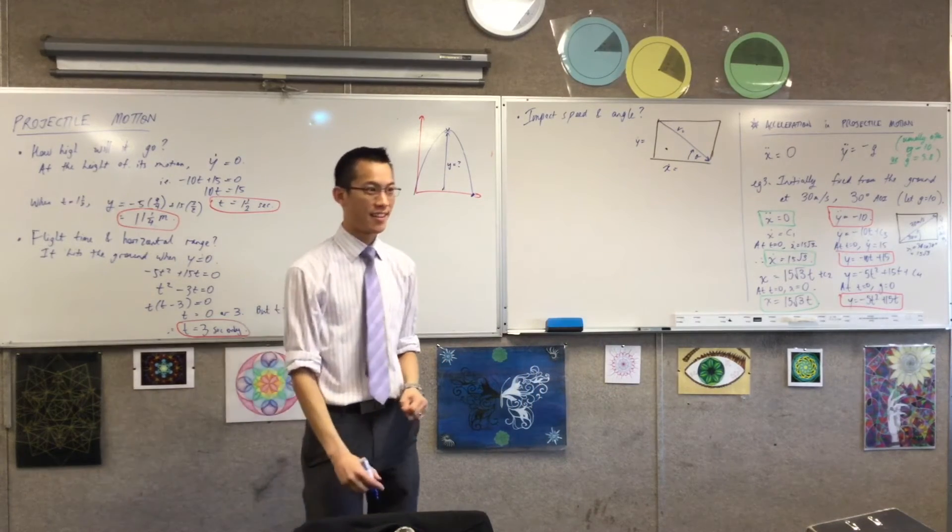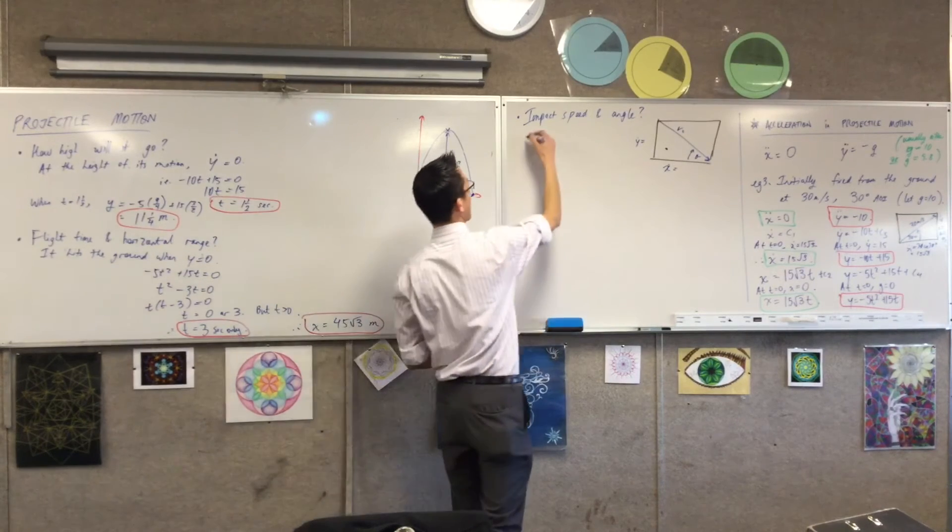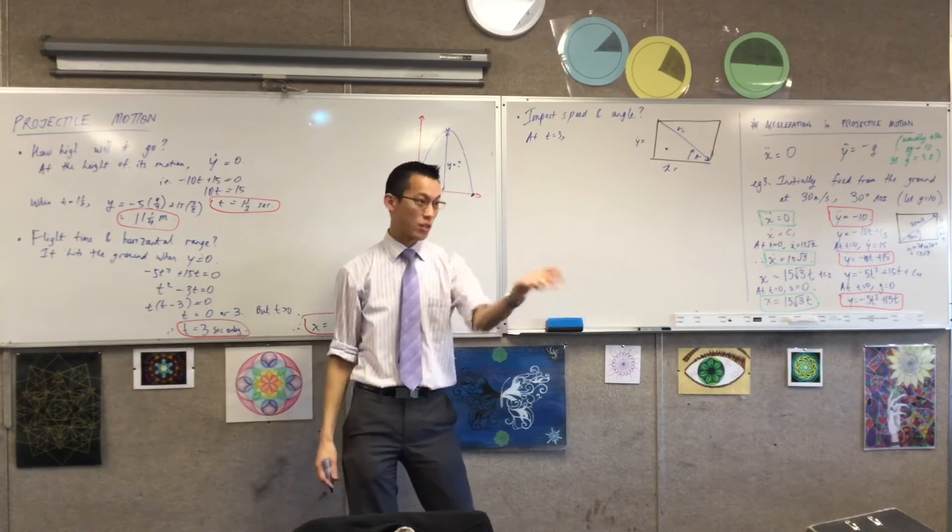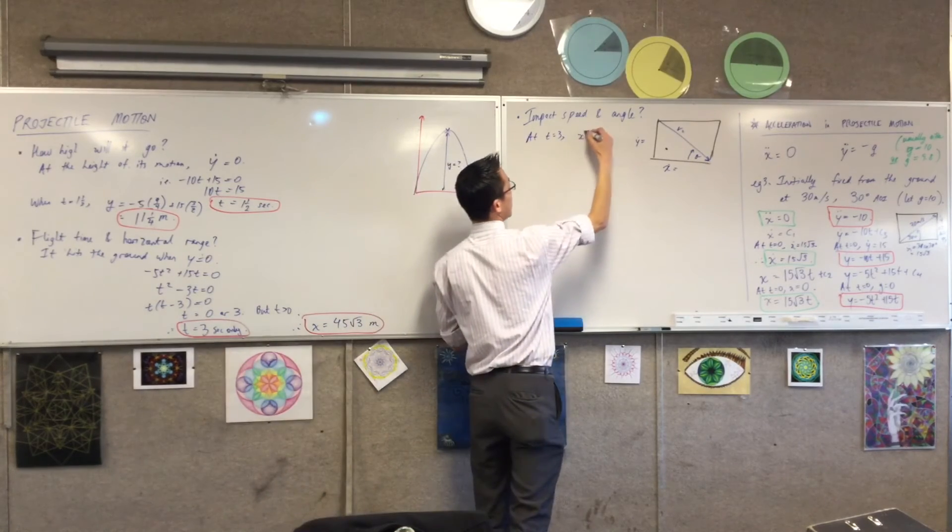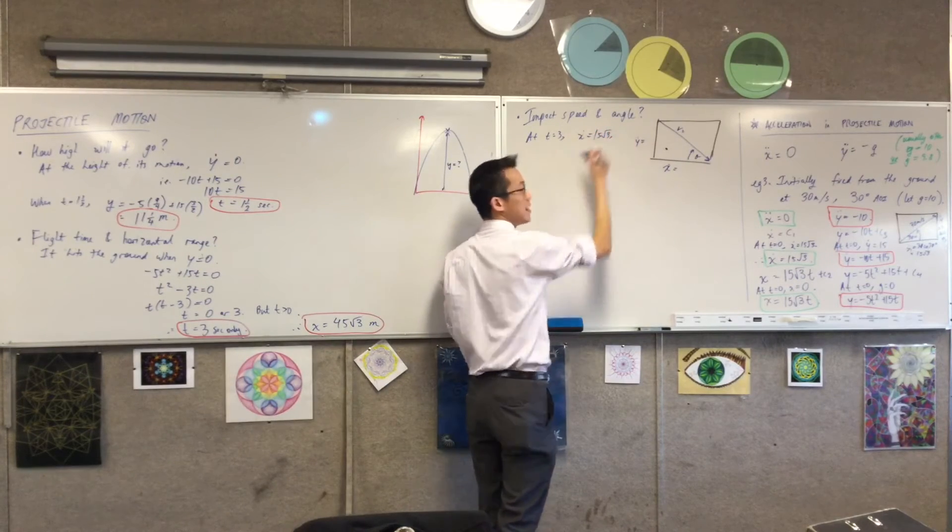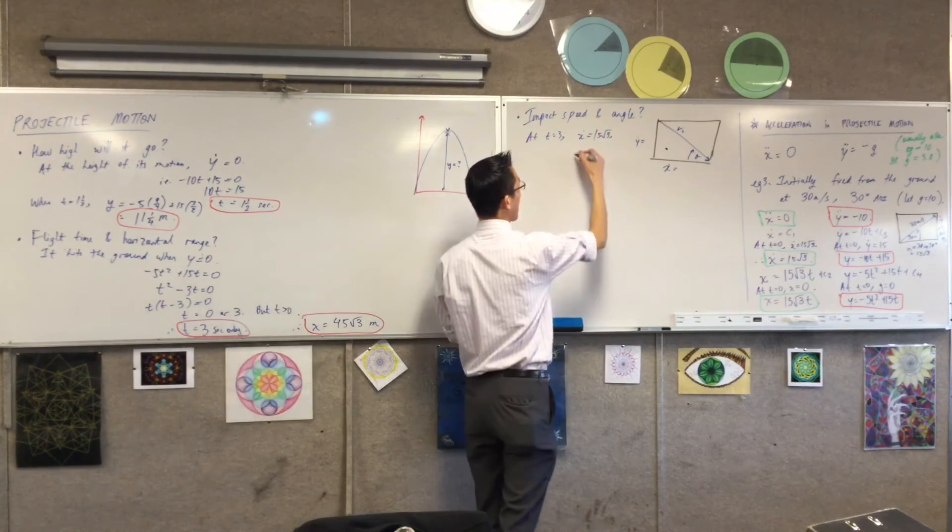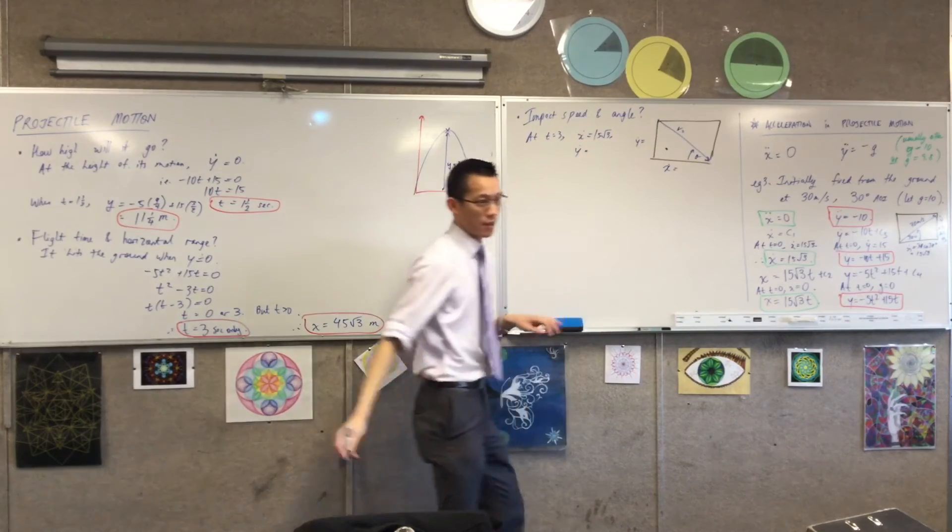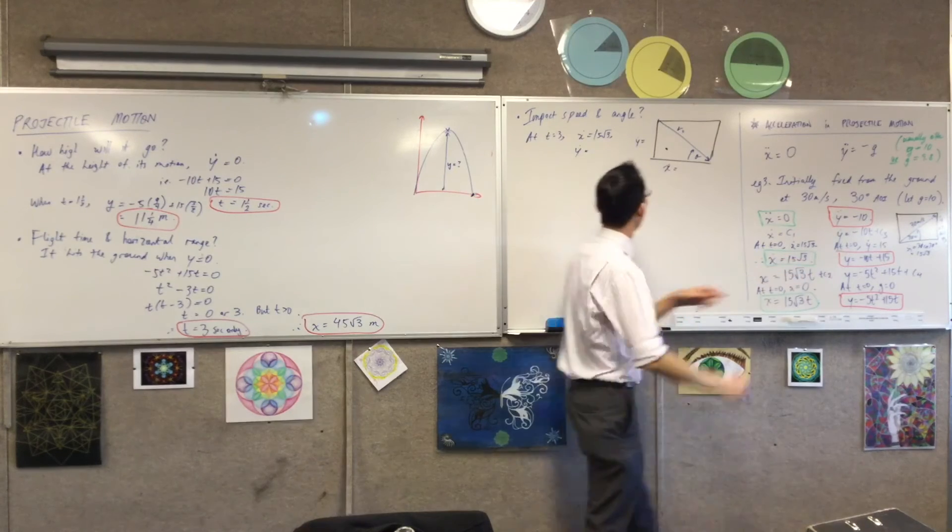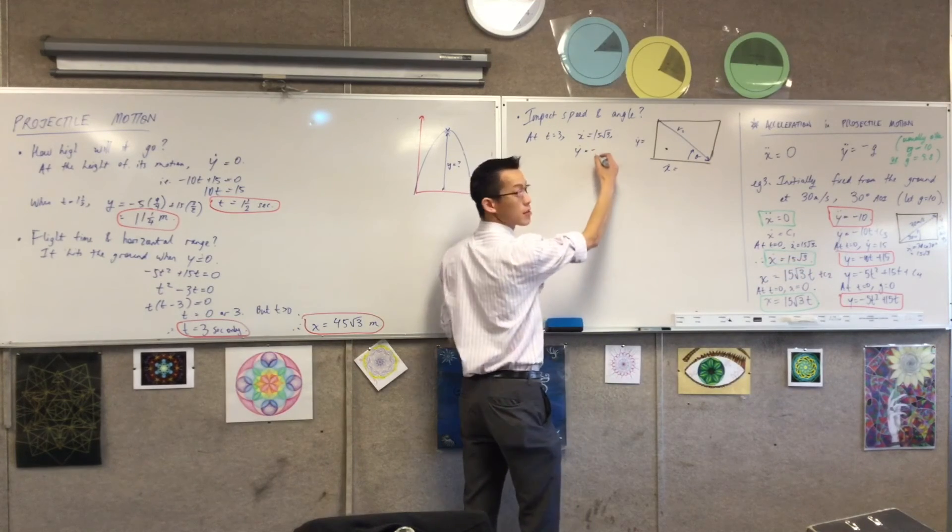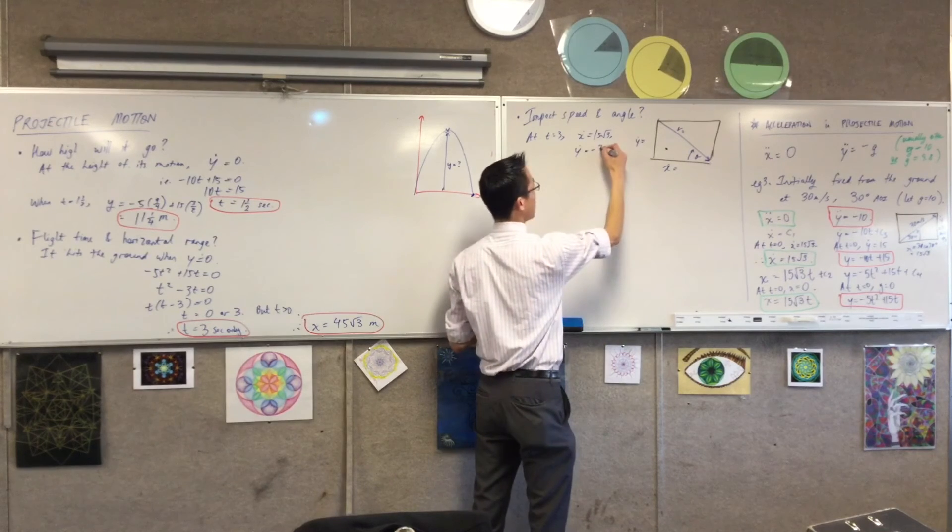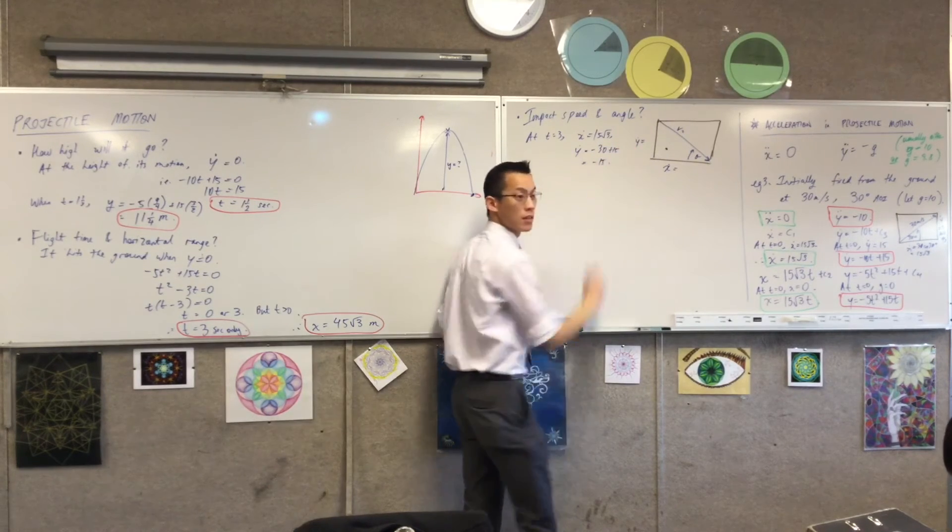Say it again? Yes, very good, but I still need to know what it is. So I'm going to say at t equals 3. We might as well say it because we can just state it. Its horizontal velocity is constant, so it's just going to be 15 root 3. Y dot has been changing all the way through. So when I put in time equals 3, here's my y dot equation here. This is minus, sorry, 30? Minus 30 plus 15, which is minus 15.